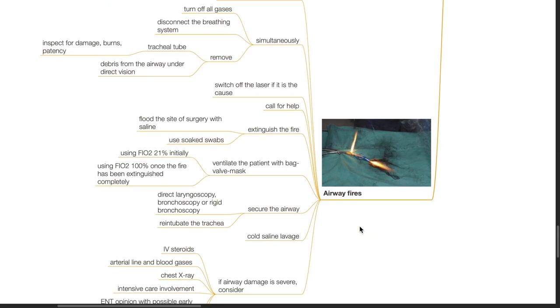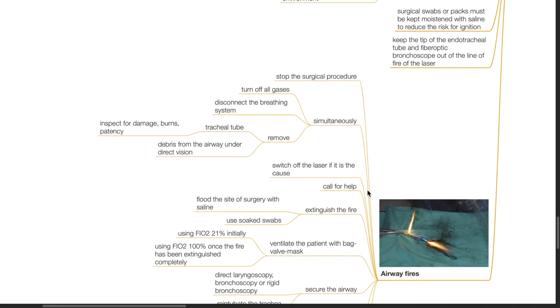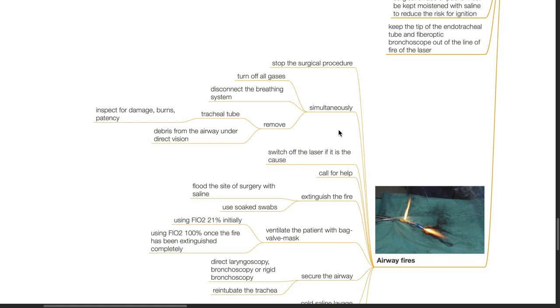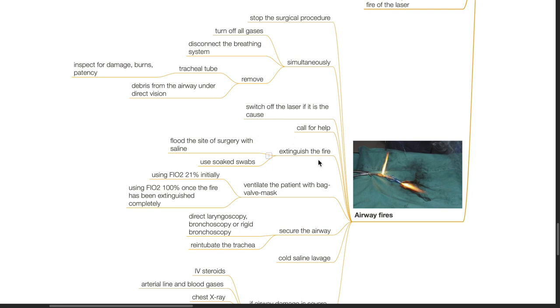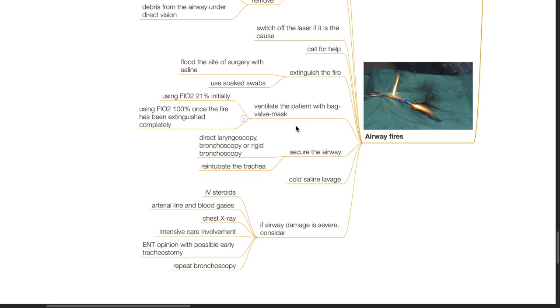Airway fires. If this occurs, stop the surgical procedure. Simultaneously turn off all gases. Disconnect the breathing system and remove the tracheal tube. Inspect for damage, burns and patency. Remove debris from the airway under direct vision. Switch off the laser if it is the cause. Call for help. Extinguish the fire. Flood the site of surgery with saline and use soaked swaps. Ventilate the patient with bag valve mask. Use FiO2 21% initially and use FiO2 100% once the fire has been extinguished completely. Secure the airway. Direct laryngoscopy, bronchoscopy or rigid bronchoscopy and re-intubate the trachea. Use cold saline lavage. If airway damage is severe, consider IV steroids, arterial line and blood gases, chest x-ray, intensive care involvement, EMT opinion, early tracheostomy and repeated bronchoscopy.